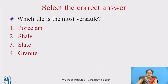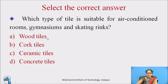Here are some questions. Select the correct answer. Which tile is the most versatile? The four options are: porcelain, shale, slate, and granite. Slate is the right answer. Next question: which type of tile is suitable for air-conditioned rooms, gymnasiums, and skating rinks? The four options are: wood tiles, cork tiles, ceramic tiles, and concrete tiles. The right answer is wood tiles.